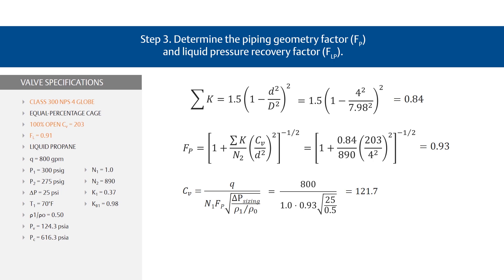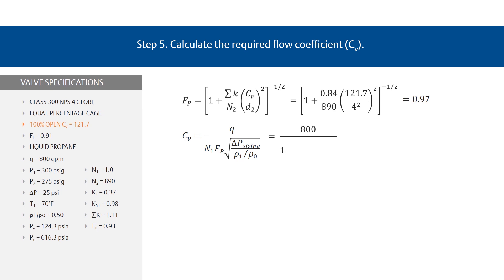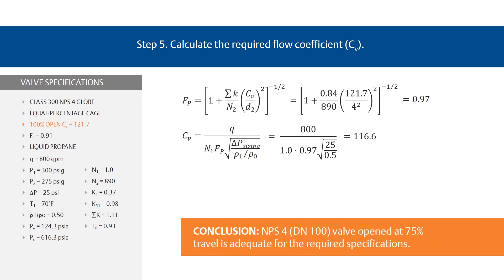This solution indicates only that the NPS4 valve is large enough to satisfy the service conditions given. There may be cases where a more accurate prediction of the CV is required. In such cases, the required CV should be redetermined using a new F sub P value based on this new CV. In this example, CV is 121.7. When we insert that into the equation, we get a new F sub P of 0.97. Now plug this F sub P value into the CV equation for a final CV of 116.6. Because this newly determined CV is very close to the CV used initially for this recalculation — 116.6 versus 121.7 — the valve sizing procedure is complete.